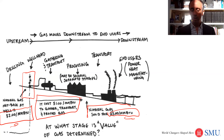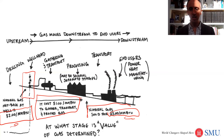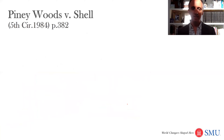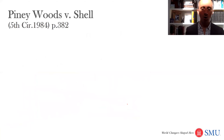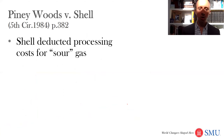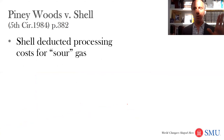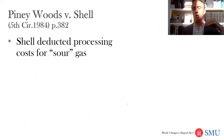By contrast, under the marketable product rule, you get one-eighth of what is produced, and it wasn't really produced until you could actually sell it. Therefore you get one-eighth of that full $3 per MMBTU price.